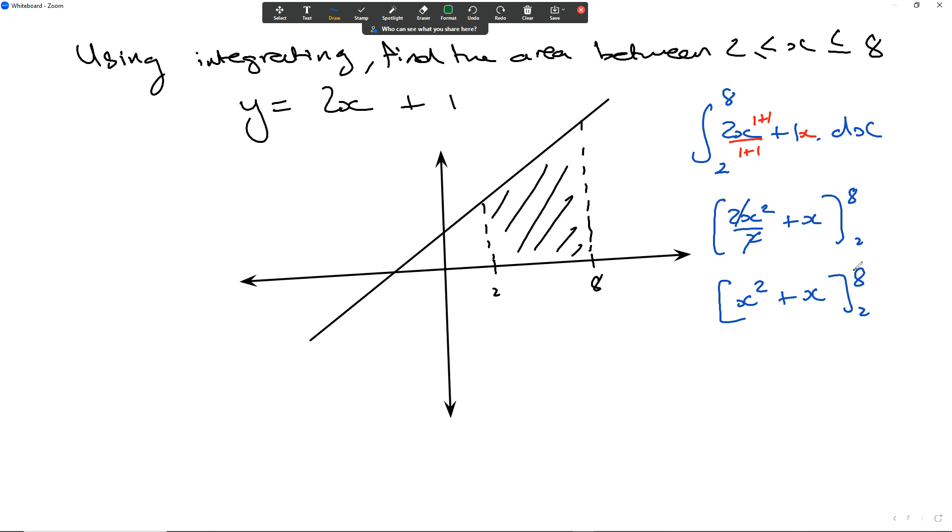Now we're going to substitute 8 in there first. We're going to get 8 squared plus 8. Then we're going to subtract 2 substituted in there, and here we're going to get 64 plus 8 which is 72. That's 4 plus 2 which is 6, and it comes to 66 units squared, which is going to be the area.